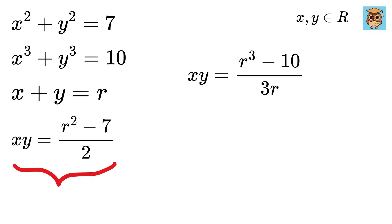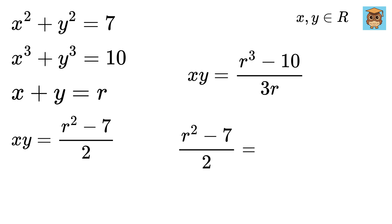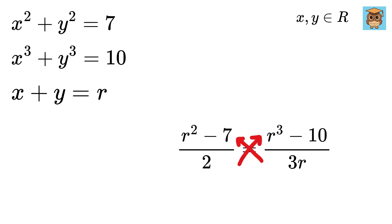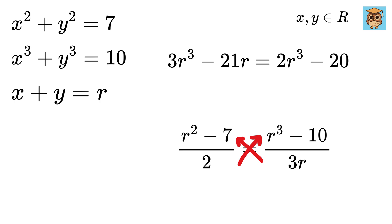But from the earlier step we have xy as r squared minus 7 over 2. Equating both expressions: r squared minus 7 over 2 equals r cubed minus 10 over 3r. Cross multiplying gives 3r cubed minus 21r equals 2r cubed minus 20.